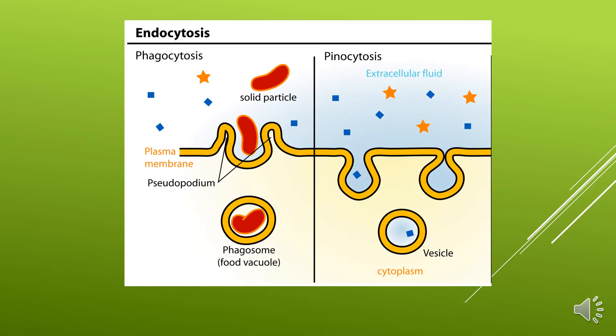In this image, we can see the endocytosis process. The steps involved in endocytosis are: first, the plasma membrane folds inwards, forming a cavity that fills with extracellular fluid and molecules; next, it forms a vesicle; third, the internalized vesicle is then processed by the cell.